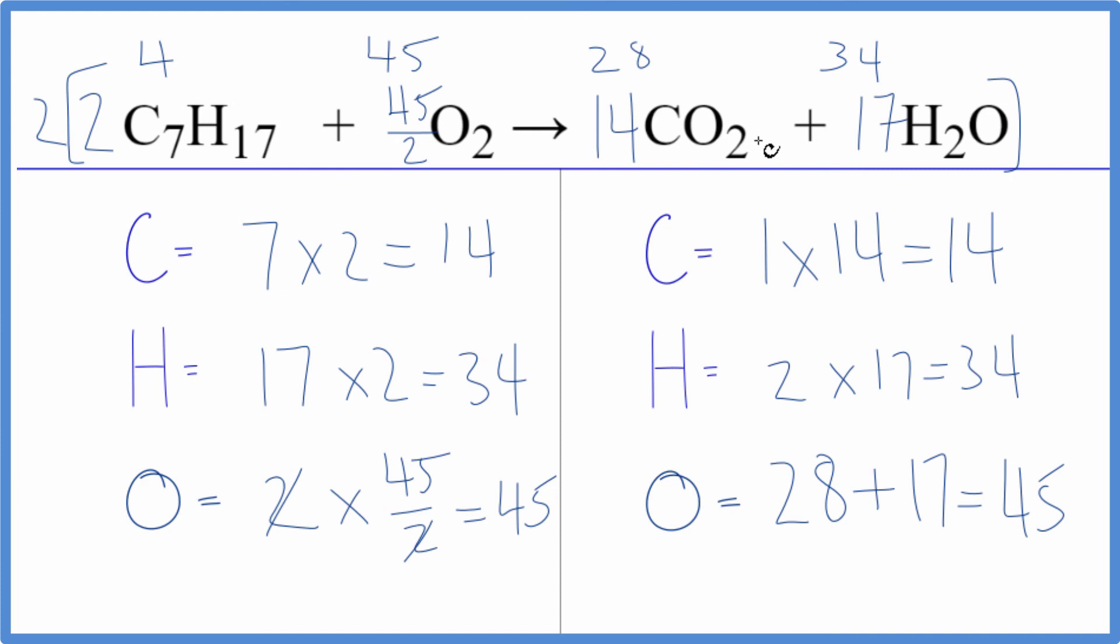It's a little bit involved, but if you follow these steps, leave the oxygens till last, and then use this little trick where we multiply 45 over 2, you'll be successful balancing this equation. This is Dr. B with the balanced equation for C7H17 plus O2. Thanks for watching.